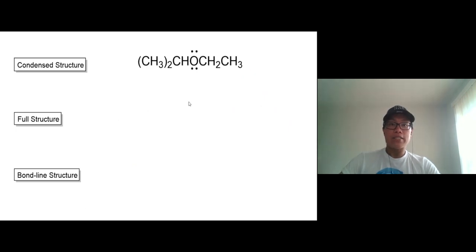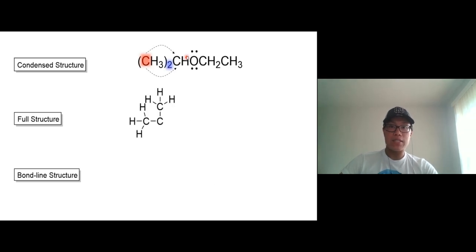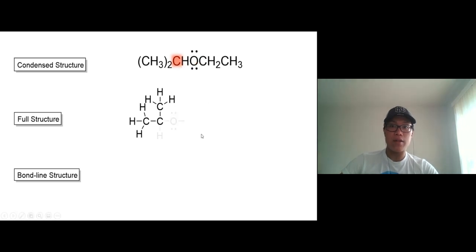Now try this one right here. Start with the first carbon — there are two CH3 groups bonded to this CH carbon. So this CH carbon right here has four bonds: two go to the two CH3 groups, one goes to hydrogen, and the last bond goes to the oxygen next to it. So you get CH3, CH3, hydrogen, and oxygen — four bonds total.